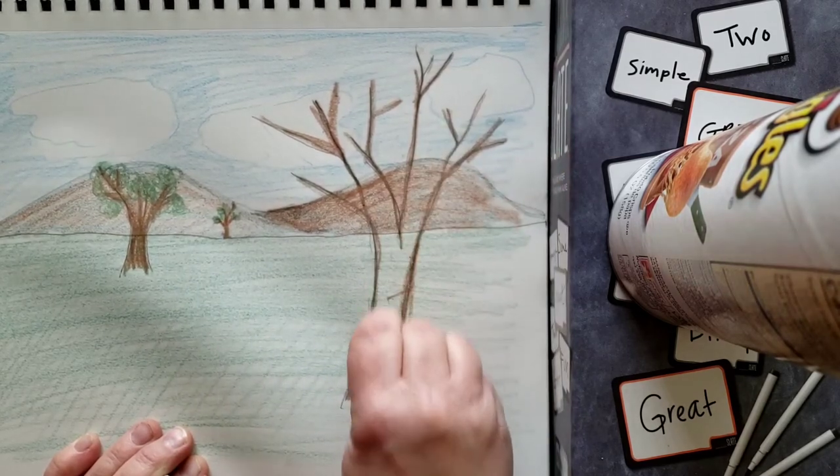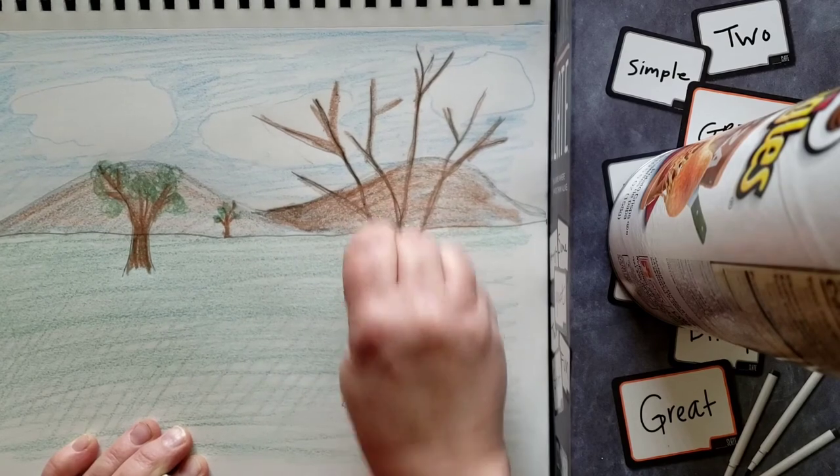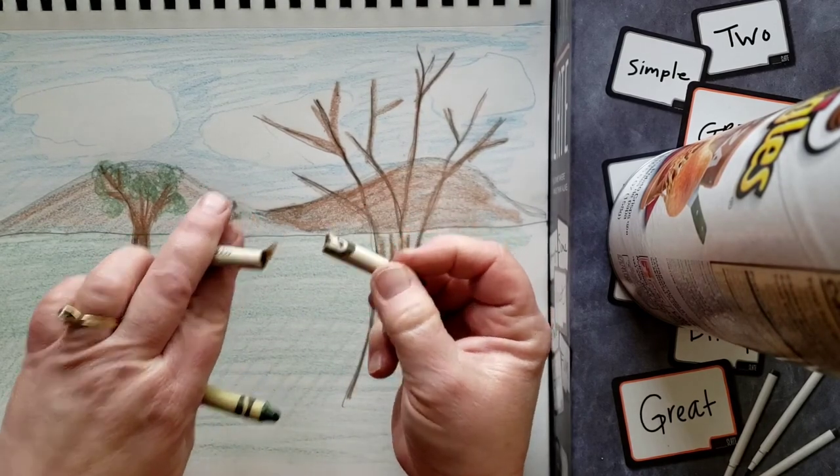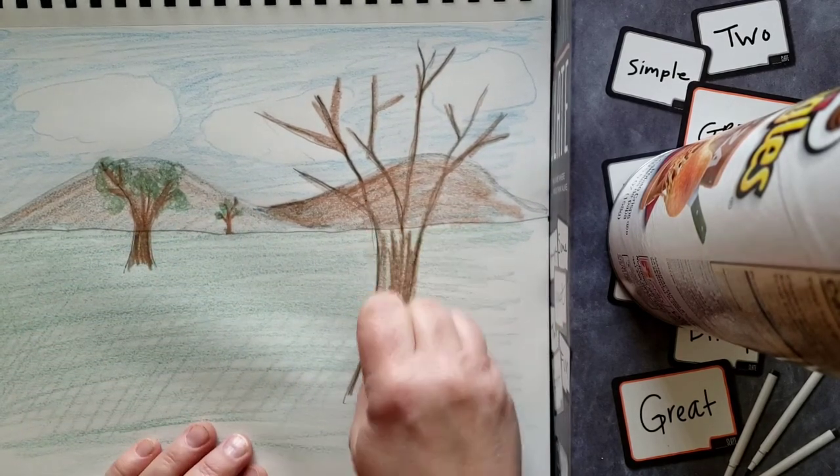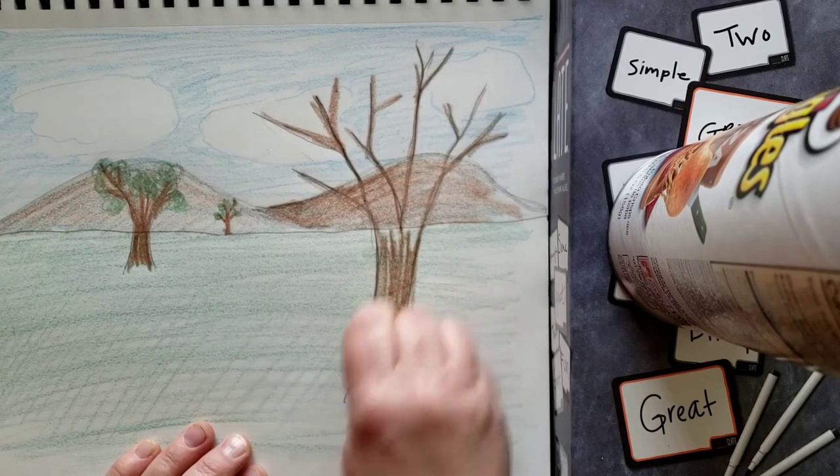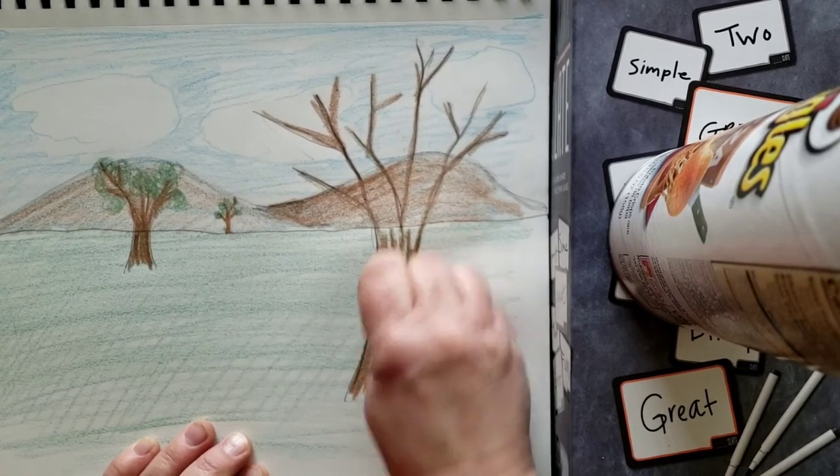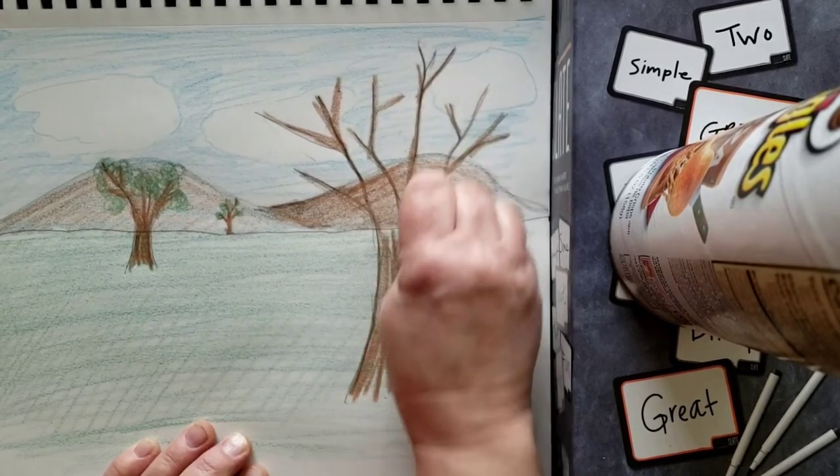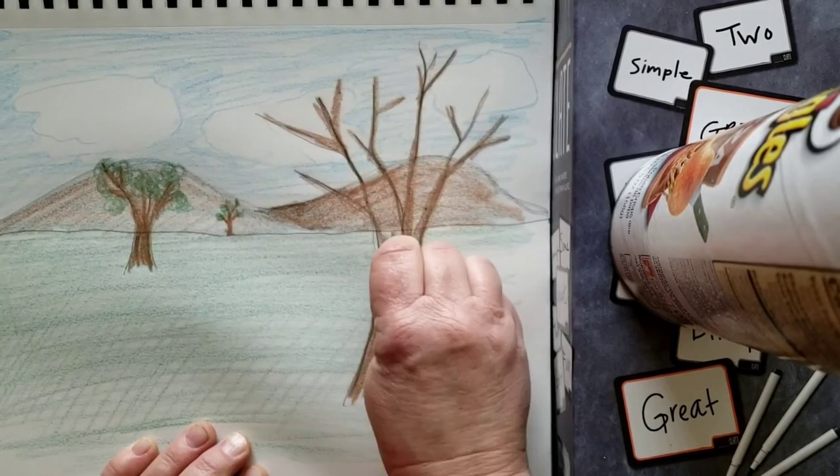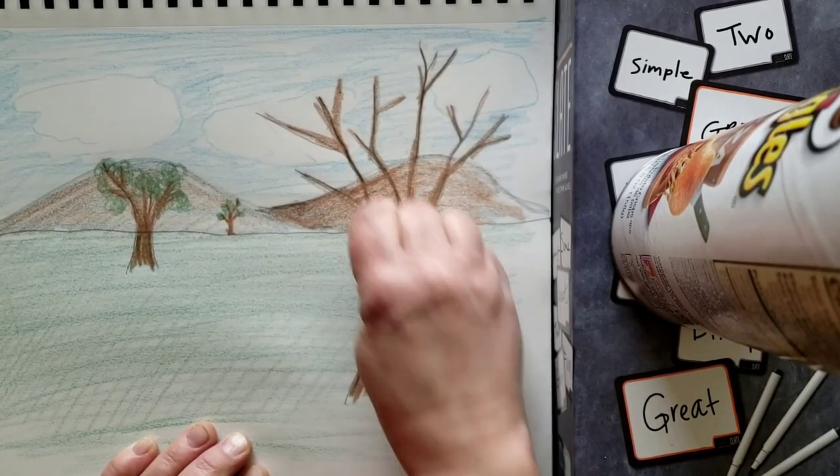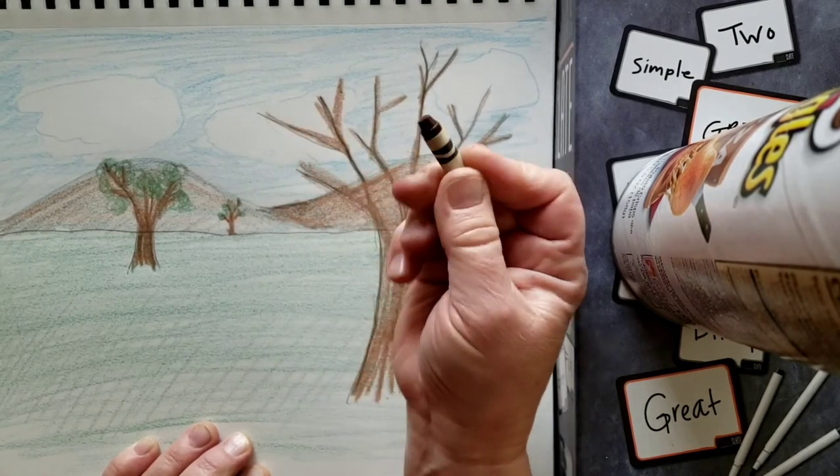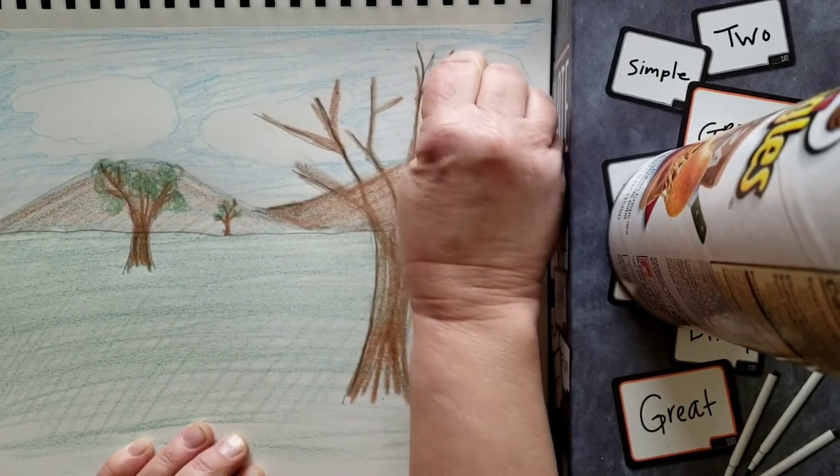And I'm going to color this trunk nice and dark. Look at, I broke my crayon. I was coloring so dark. Has that ever happened to you? You're coloring nice and dark. Nothing to get upset about. Crayons can always be replaced with more crayons. Or you can use just the little broken bits. They still color.